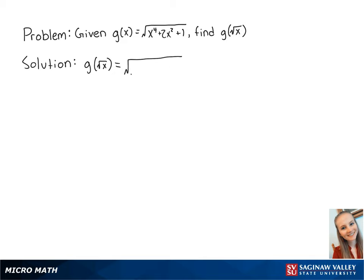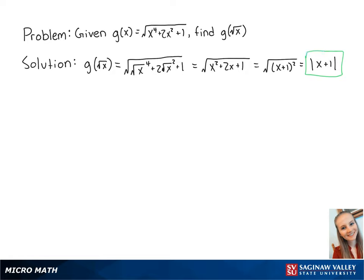So we get the square root of the square root of x to the fourth power plus 2 times the square root of x squared plus 1. This is equal to the square root of x squared plus 2x plus 1. This can be factored to become the square root of x plus 1 squared, which is equal to the absolute value of x plus 1. And this is the final answer.